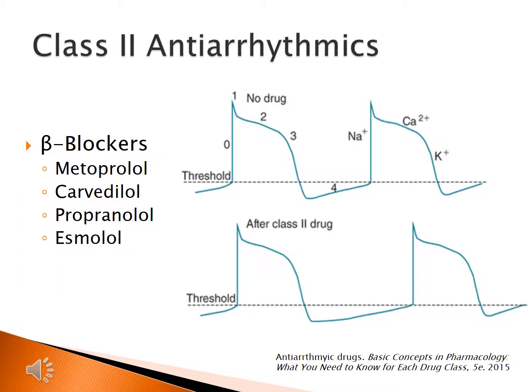Our class 2 antiarrhythmic medications are our beta blockers. Examples include metoprolol, carvedilol, propranolol, or esmolol. Beta blockers work by blocking the action of catecholamines at the beta-1 adrenergic receptors within the heart, ultimately slowing conduction through the SA and AV node to prolong phase 4, or the refractory period.